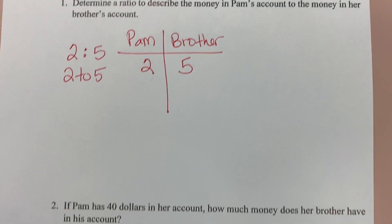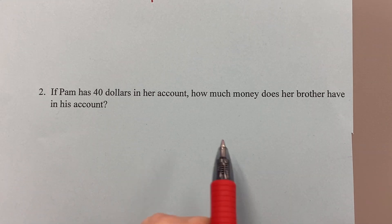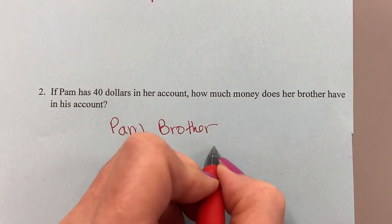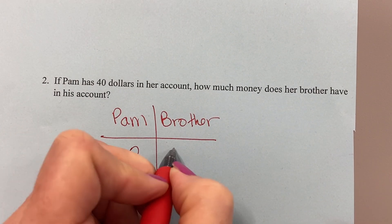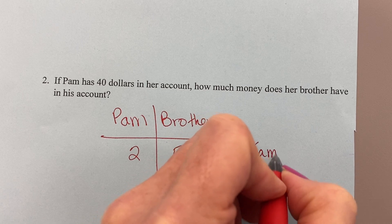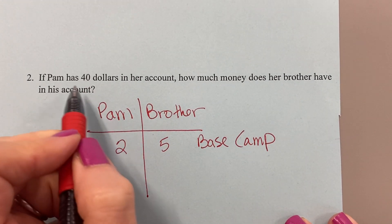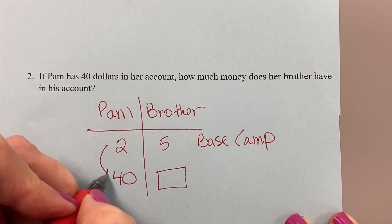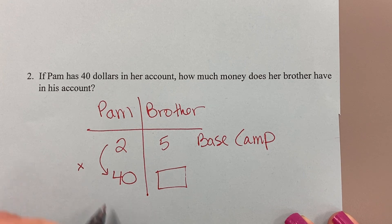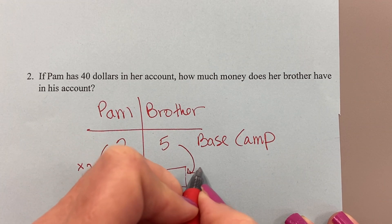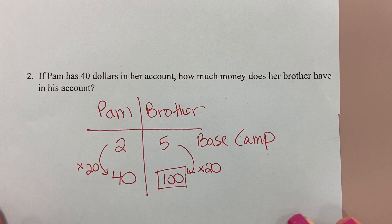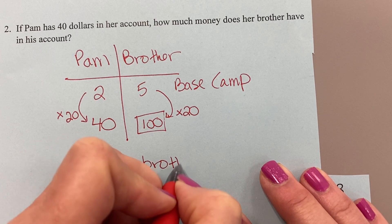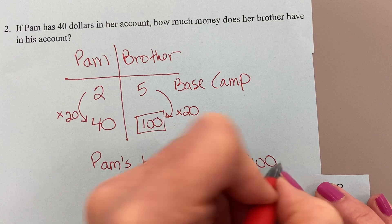Now, part two. If Pam has $40 in her account, how much money does her brother have in his account? So let's go back to base camp. Pam, brother. That ratio was 2 to 5. Remember, this is base camp. That baseline ratio that you always come back to. Now what are they telling me? Pam has $40. So what does her brother have? Well, what's your multiplier? 2 times what makes 40? Well, I hope you're thinking 20. Then you must mimic that over here. What's 5 times 20? 100. So if Pam has $40, Pam's brother has $100. Very good.